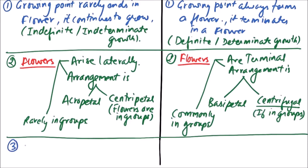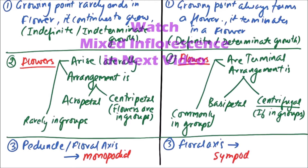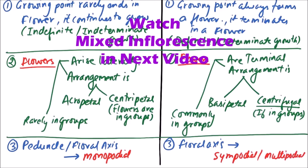The next difference is that in racemose inflorescence the peduncle or floral axis is monopodial, while in cymose inflorescence the floral axis is sympodial or multipodial.